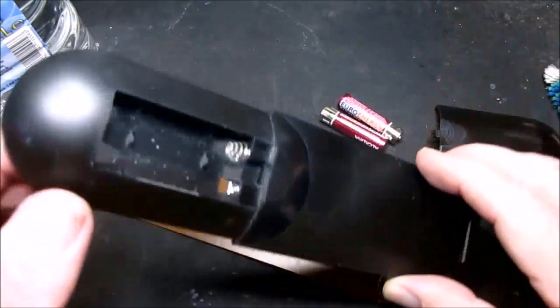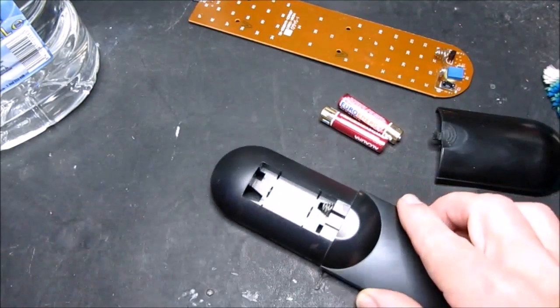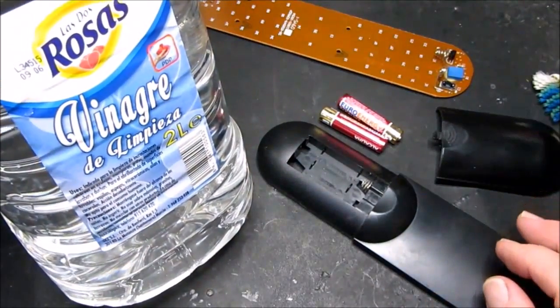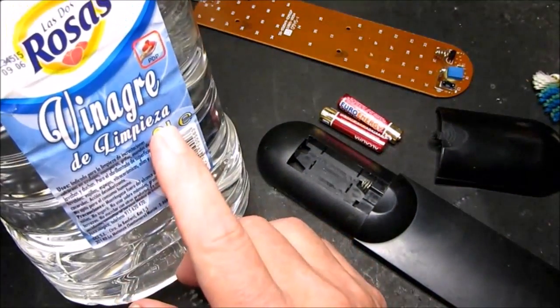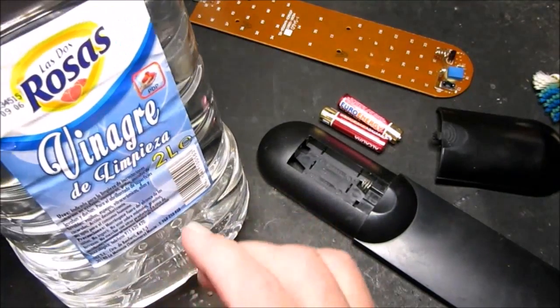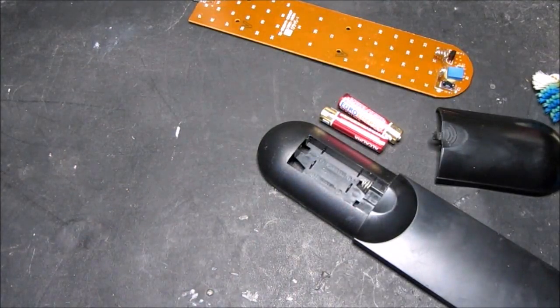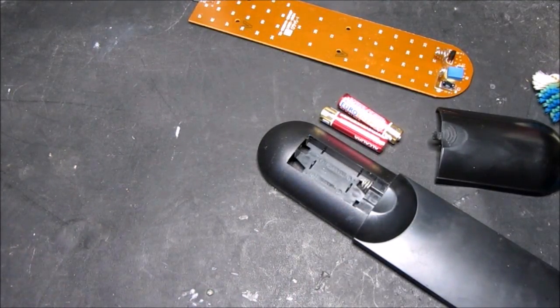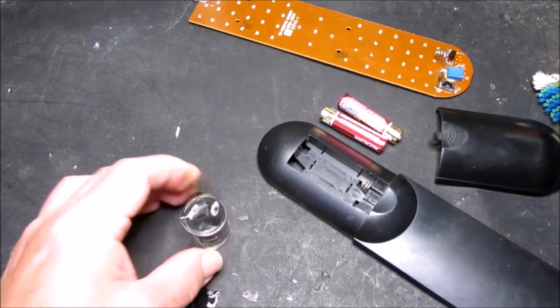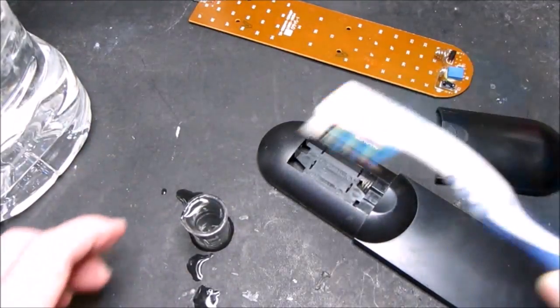To clean up this little bit of corrosion, what I like to use is vinegar. This is vinegar for cleaning, so this is not something you put on your chips and it's less expensive. Just get a drop of this and our trusty toothbrush.